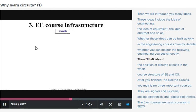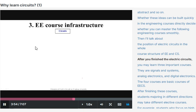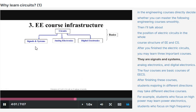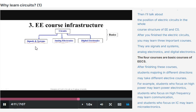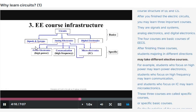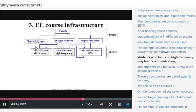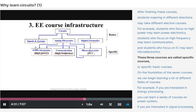Then I will talk about the position of electric circuits in the whole course structure of EE and CS. After you finish the electric circuits, you may learn three important courses: signals and systems, analog electronics, and digital electronics. The four courses are basic courses of EECS. After finishing these courses, for example, students who focus on high power may learn power electronics. Students who focus on high frequency may learn communication. And students who focus on IC may learn microelectronics.